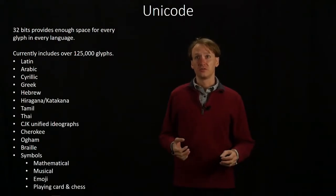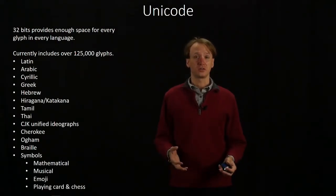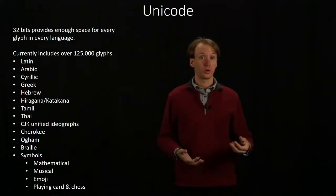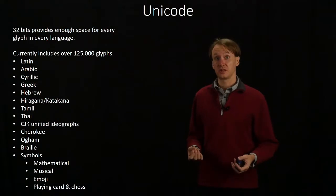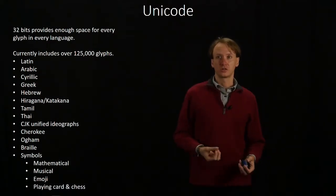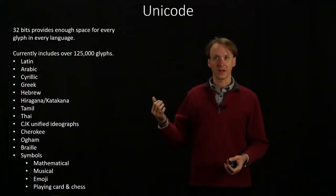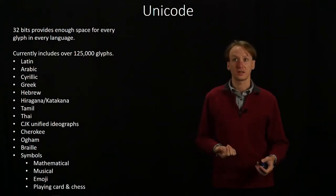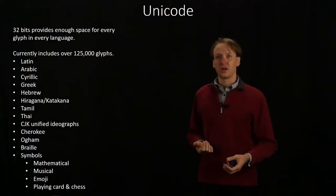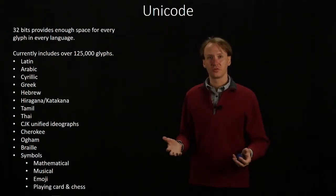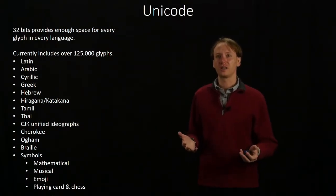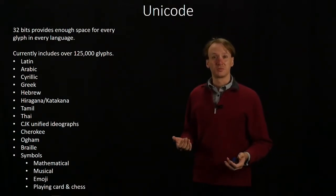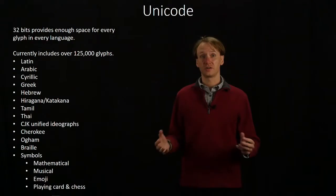This gives us a huge amount of space to represent characters. The current Unicode format has over 125,000 different glyphs that it supports, which is enough to support Latin, Arabic, Cyrillic, Greek, Hebrew, Hiragana, Katakana, as well as other languages that you may never have heard of and may not have any interest in ever writing in, like Cherokee or Ogham. There's also room to support things like Braille, as well as a ton of different symbols.